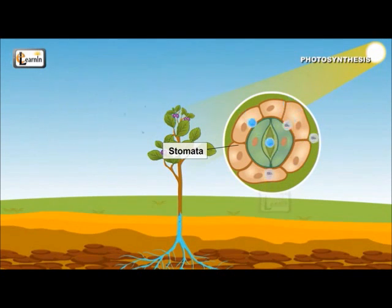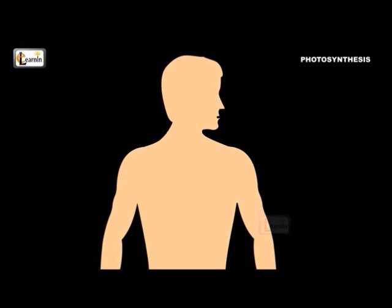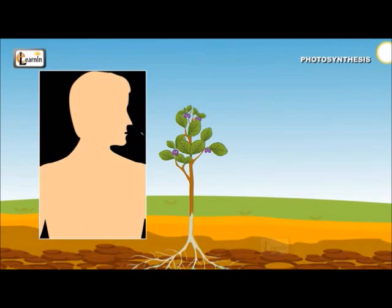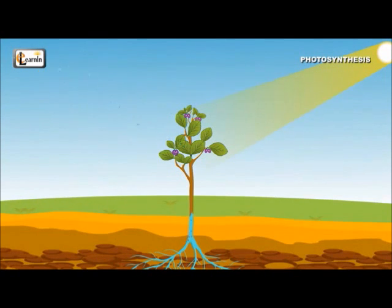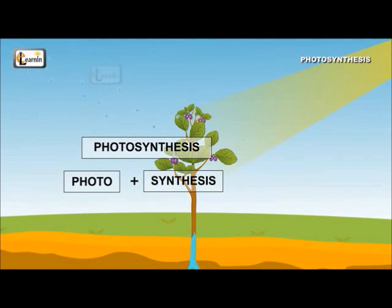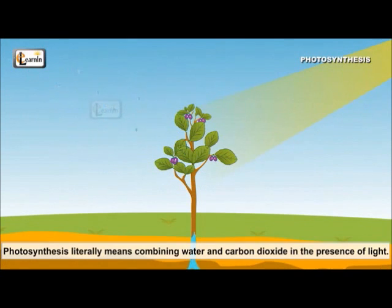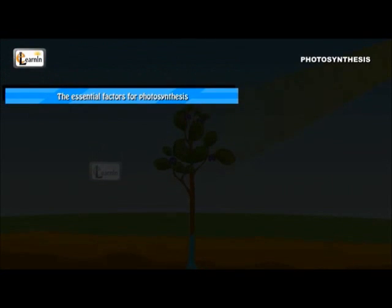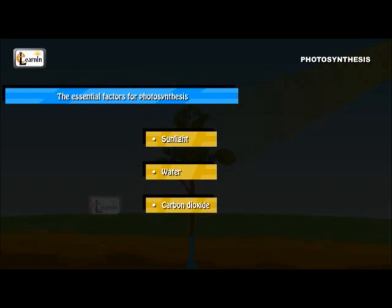Oxygen is given out into the air through the stomata in the process of photosynthesis. The oxygen that is released is used by human beings to breathe during their respiration process. The word photosynthesis is a combination of two Greek words: photo and synthesis. Photo means light in Greek and synthesis means putting together or combining. Hence, photosynthesis literally means combining water or carbon dioxide in the presence of light. The essential factors for photosynthesis to take place include sunlight, water, and carbon dioxide.